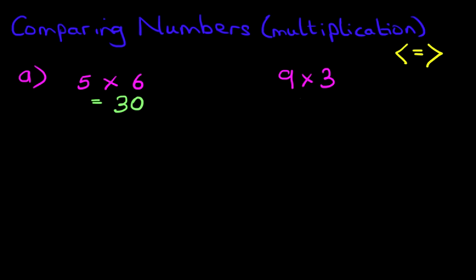How about this one over here? 9 times 3. 9 times 3, again you should know this from your 3 times table, is 27.